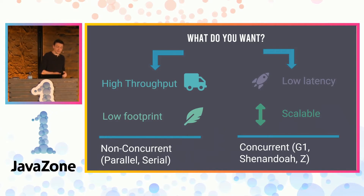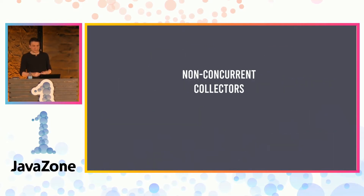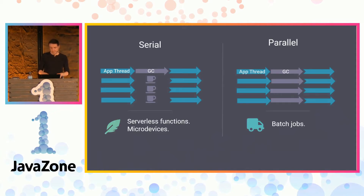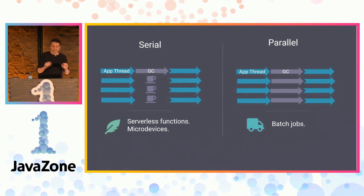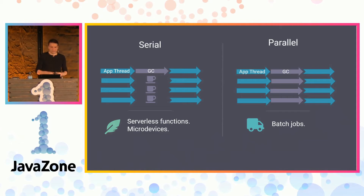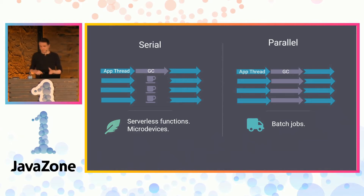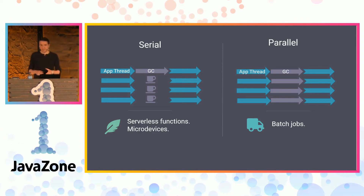We have two non-concurrent collectors: Parallel and Serial. If you need low latencies or your application has to answer very quickly and be scalable, the concurrent are the best choice, and we have three concurrent collectors: G1, Shenandoah, and ZGC. Serial was introduced in Java in 1999 — it's 20 years old — and Parallel in 2002. Serial works with only one thread, is very lightweight, and is a good choice for nano services and micro devices. Amazon Lambda uses this garbage collector, for example. In general, if you have less than 100 megabytes, it's a good choice. Parallel uses more threads to clean the memory and is currently a very good choice for batch jobs or big data processing — when you have no interactivity but you need speed.